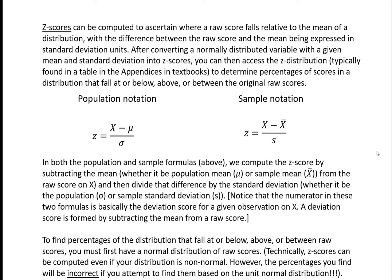Let me drive home another point: it is a common misconception that if you take a raw score distribution that is not normally distributed and convert those raw scores into z-scores, the distribution will somehow become normal. That is incorrect. You can compute z-scores based off of raw scores irrespective of the shape of the distribution. However, to use z-scores in reference to the unit normal distribution, the original raw score variable must be normally distributed. Converting raw scores to z-scores does not transform your original variable into a normally distributed variable.